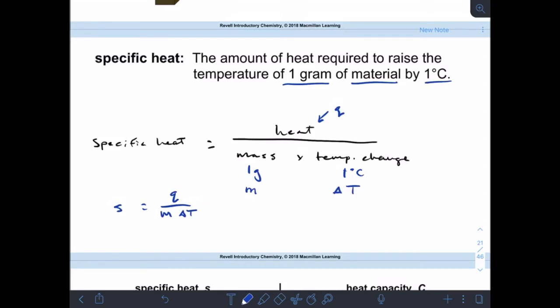All right, so I'm going to rearrange that to put q by itself. So q equals m times s times delta t. Okay, this is a very important equation. We're going to be using this a ton. Okay, so this is one that you need to know. It's on your list of things to memorize. q equals m s delta t. Okay, sometimes you'll see the s, instead of s, they'll have a c. So it'll be m c delta t, but the result is the same.